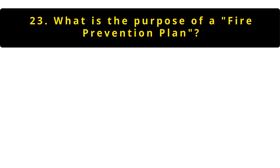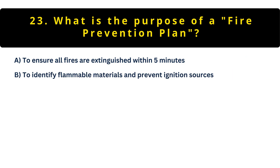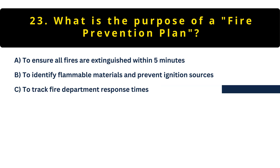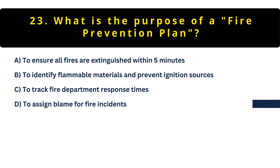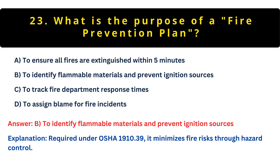Question 23: What's the purpose of a fire prevention plan? Option A: Ensure 5-minute fire response. Option B: Identify flammables and ignition sources. Option C: Track response times. Option D: Assign blame. B is correct. A good fire prevention plan proactively identifies what could burn and what could start a fire, then implements controls to keep them apart — much better than reacting after the fact.